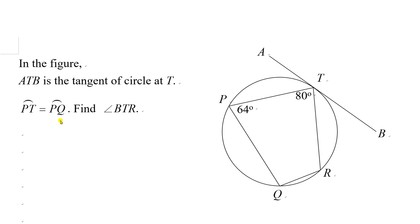First of all, you want to use the equal arc property. You need to draw a straight line PR, because when you draw a straight line PR, angle TRP equals to angle PRQ. That's equal arc, equal angles.